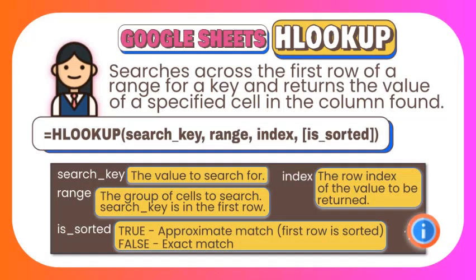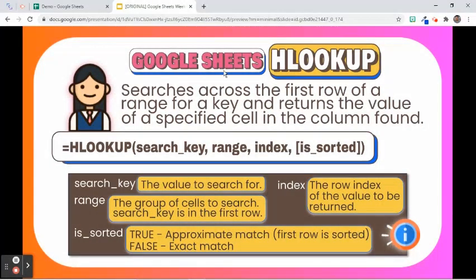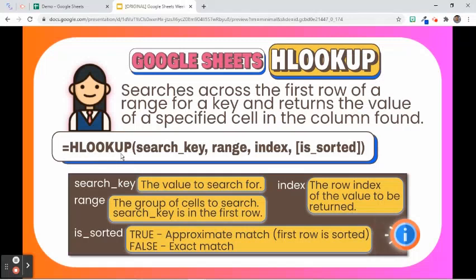Let's now talk about the next function. HLOOKUP stands for Horizontal Lookup. It searches across the first row of a range for a key and returns the value of a specified cell in the column found. The syntax is: =HLOOKUP(search_key, range, index, is_sorted).